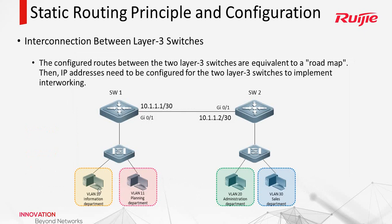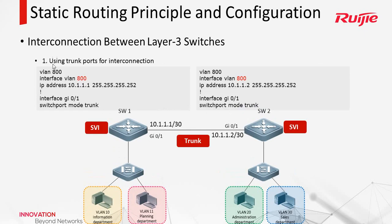SW1 is the gateway for this network and SW2 is the gateway for this network. Between them, we need to configure a layer 3 interface and assign IP addresses. Here is another network, so we have several ways to configure. The first way: we can use trunk ports for interconnection. Then we create a VLAN for this link, configure the interface VLAN, and change the mode to trunk. Using this way, both layer 3 and layer 2 can forward on this link.